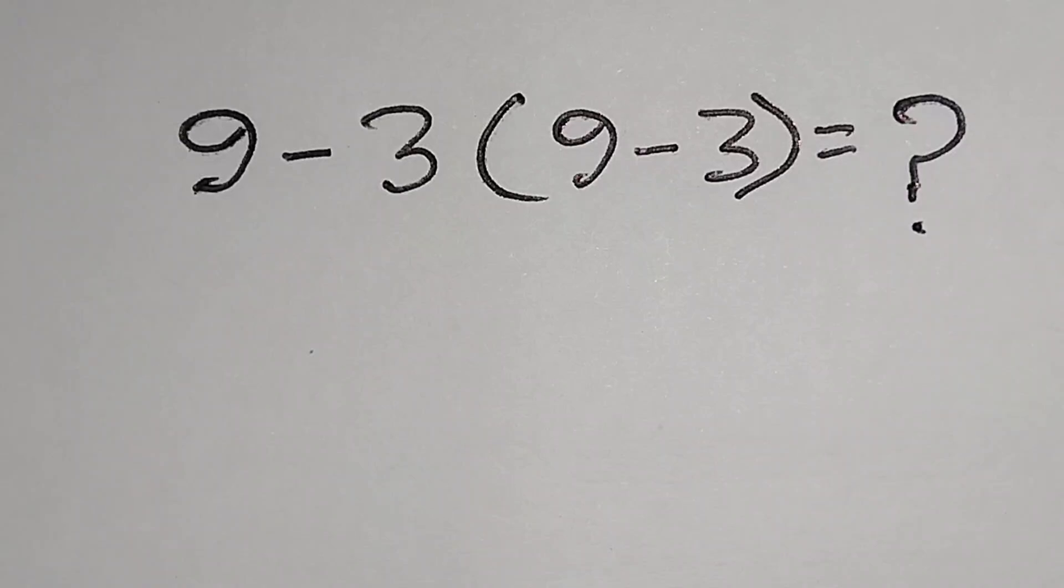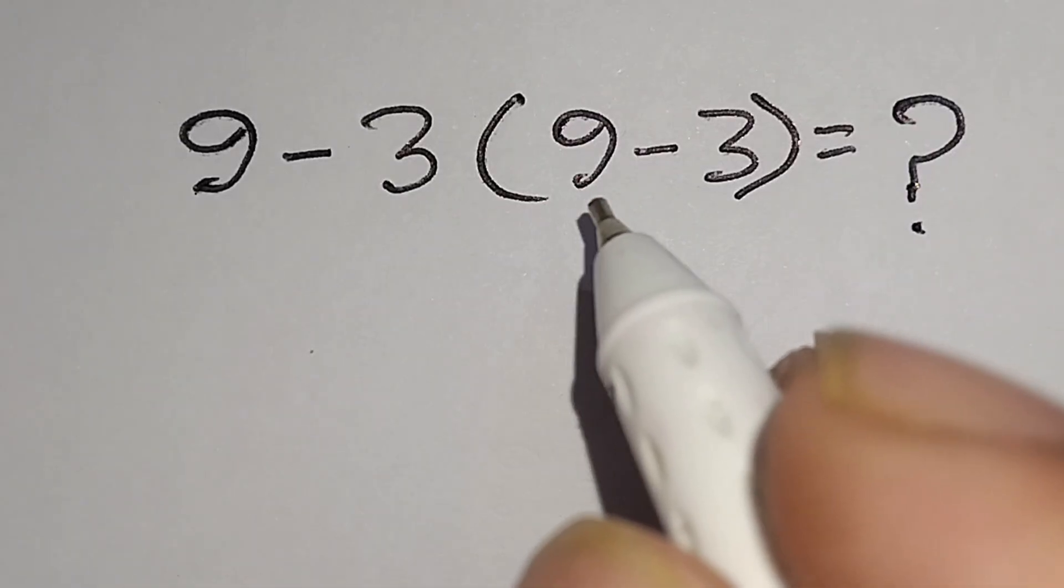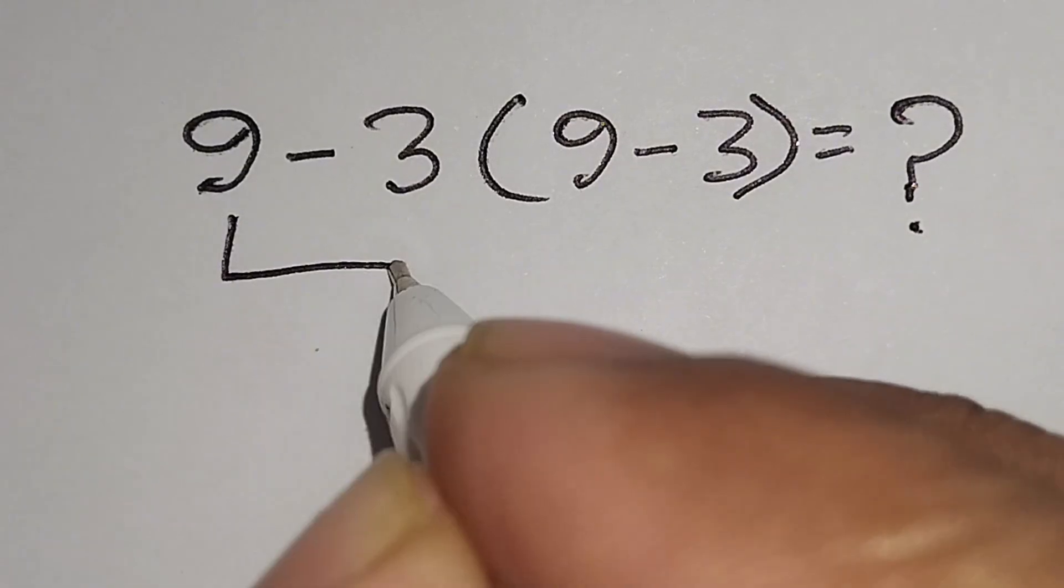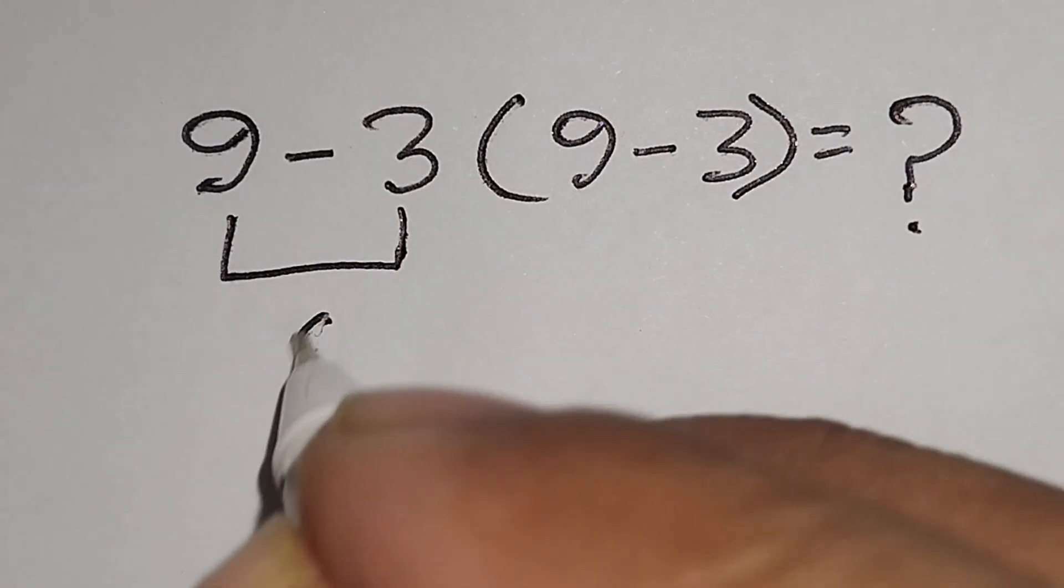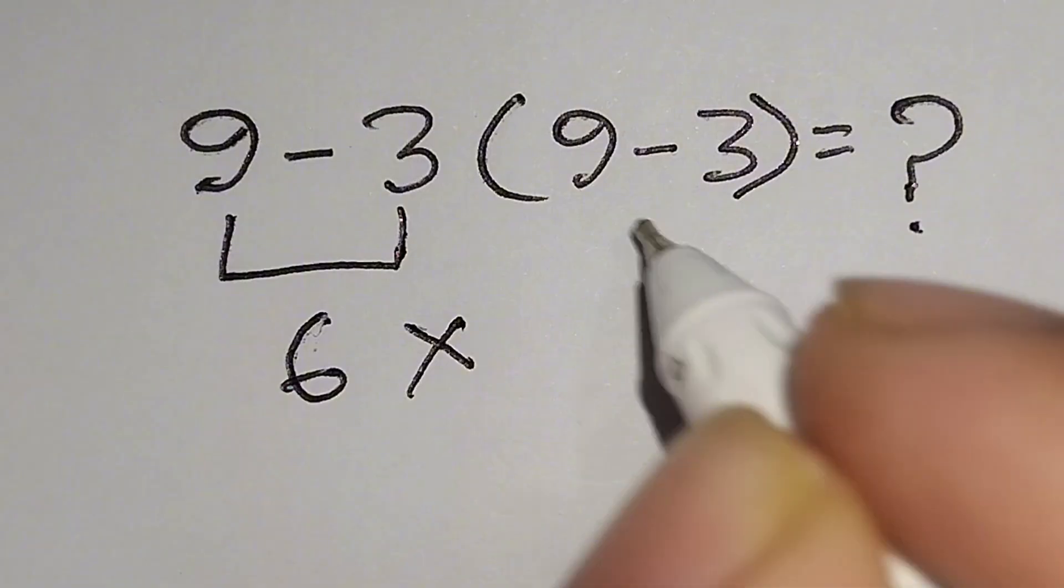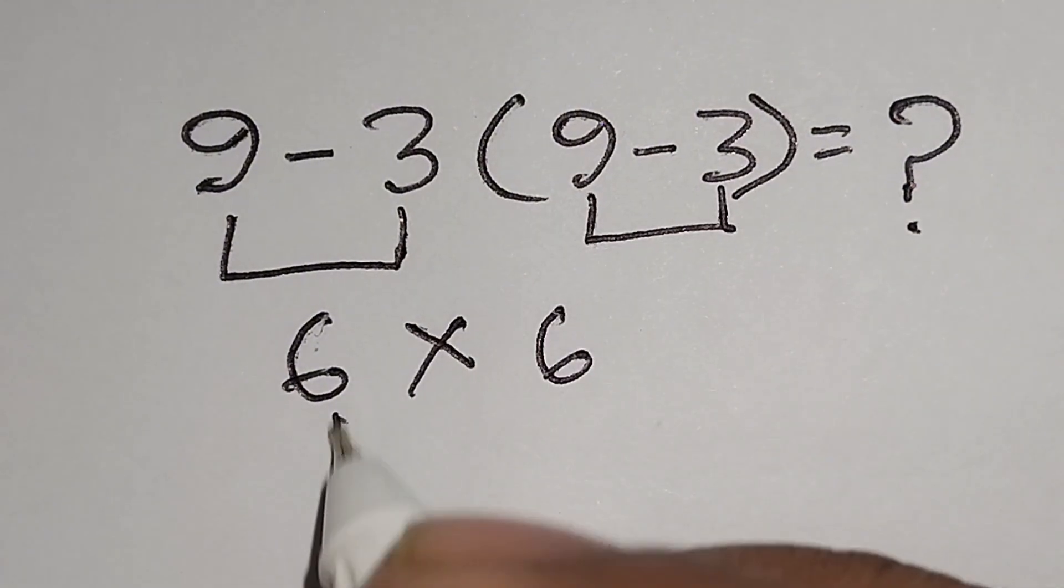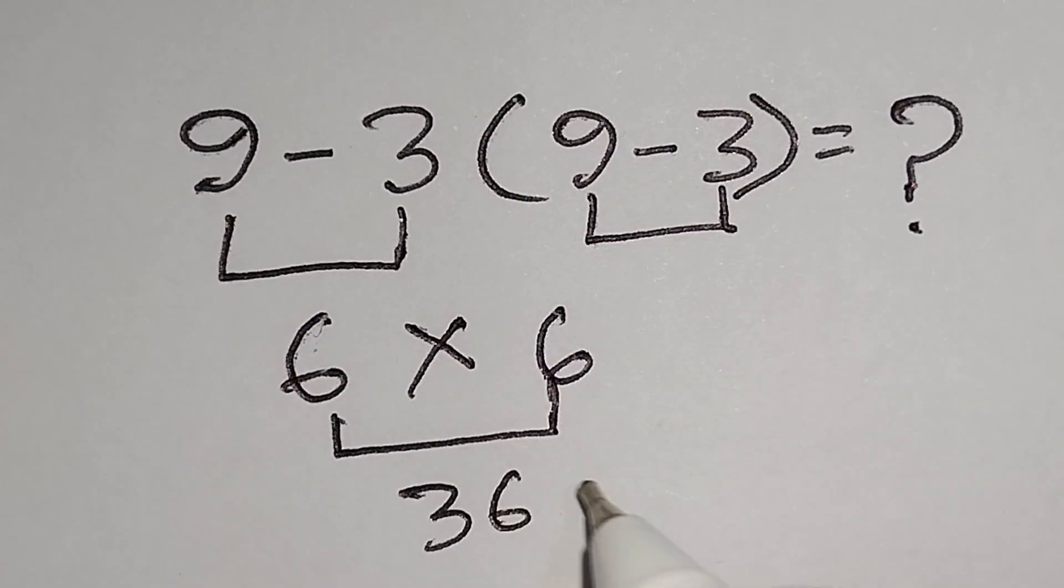Hi guys, this is a nice math problem: 9 - 3(9 - 3) = ? Here, 9 - 3 gives us 6. Multiply 9 - 3 gives us 6, so 6 multiply 6 gives us 36. But it is not correct.